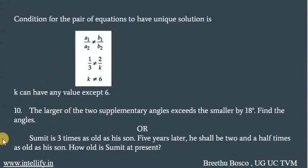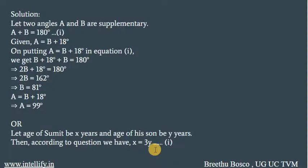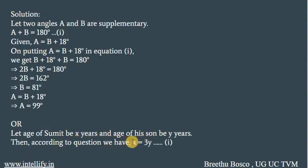The second option: Sumit is three times as old as his son. Five years later, he shall be two and a half times as old as his son. How old is Sumit at present? Let the age of Sumit be X and the age of his son be Y. According to the question, X = 3Y.